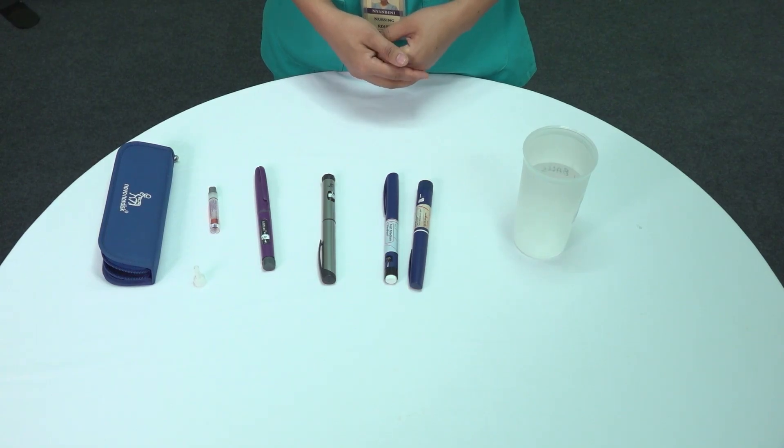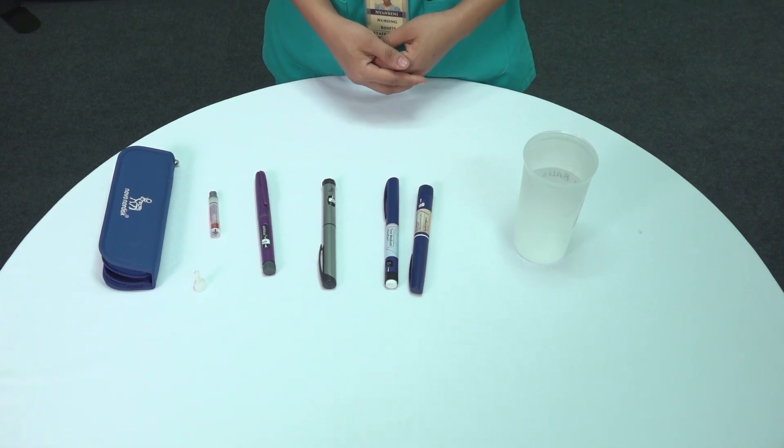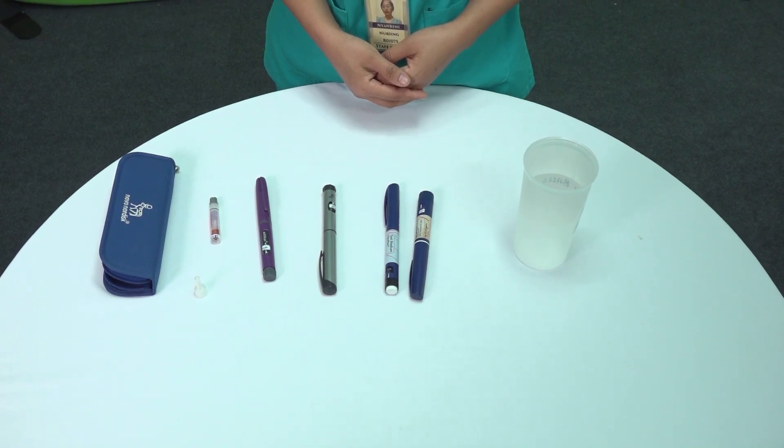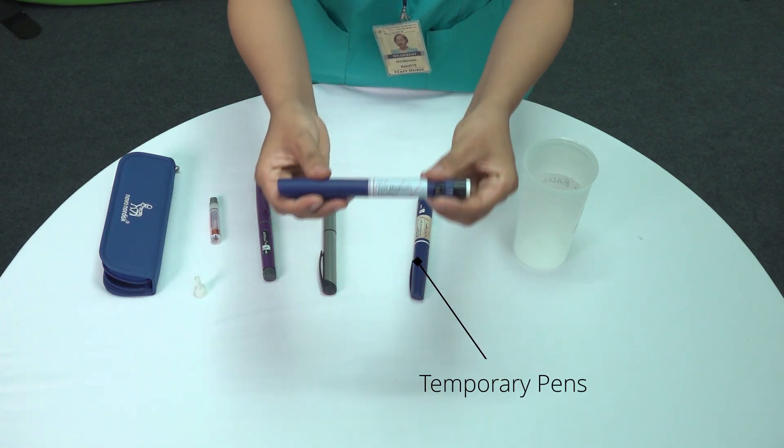We're going to break down the different types of insulin pens that are commonly used in diabetes management. Insulin pens come in two main categories: temporary pens and permanent pens.